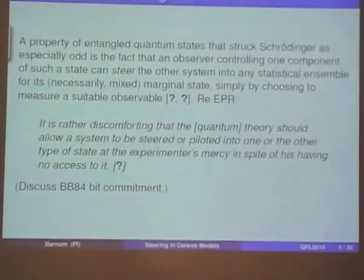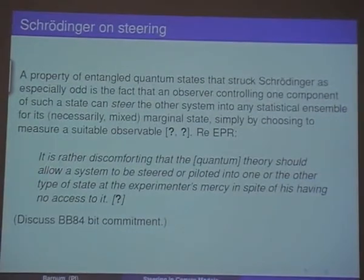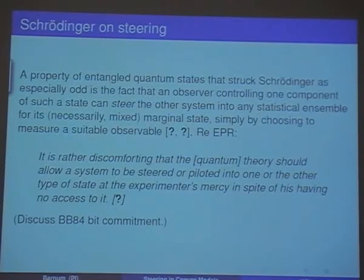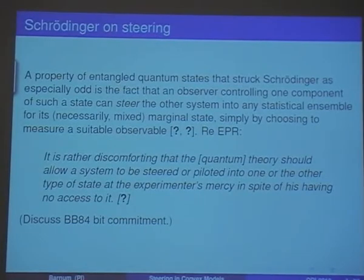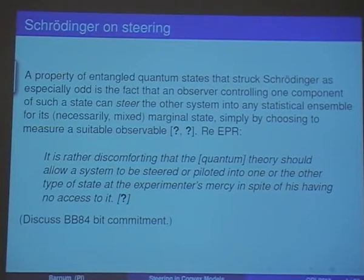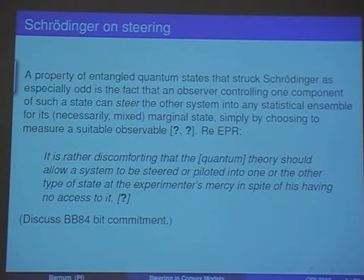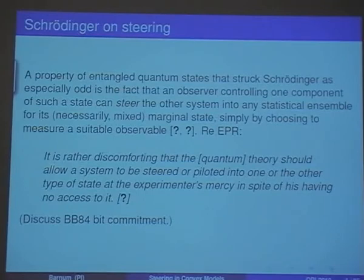Here's a property that Schrodinger found particularly weird about quantum theory: if you control one component of an entangled state, you can steer the other component into any statistical ensemble for its mixed marginal state, just by choosing to measure a suitable observable. He was thinking about EPR — the choice of whether I measure position or momentum is going to determine whether the states conditional on those measurement outcomes are position eigenstates or momentum eigenstates at the other party.